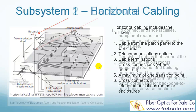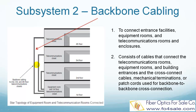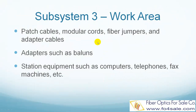Backbone Cabling is also called vertical cabling or cross-connect cabling. It is necessary to connect entrance facilities, equipment rooms, and telecommunications rooms. This figure shows backbone cabling that connects an equipment room with telecommunications rooms. Backbone Cabling consists of not only the cables connecting these spaces but also cross-connect cables, mechanical terminations, or patch cords used for backbone-to-backbone cross-connections.